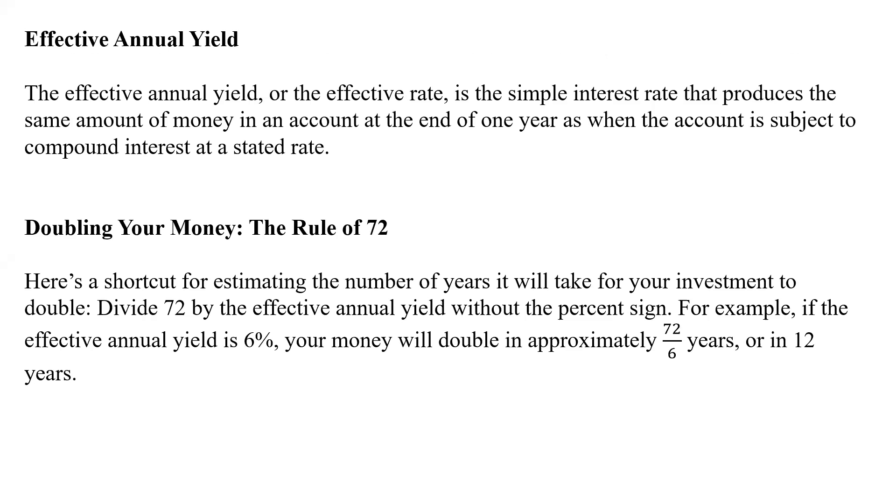The effective annual yield or the effective rate is the simple interest rate that produces the same amount of money in an account at the end of one year as when the account is subject to compound interest at a stated rate. So we're comparing a stated rate for compounding and looking at the effective rate as simple interest.